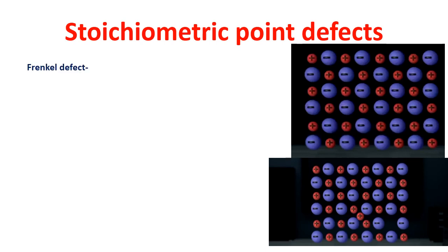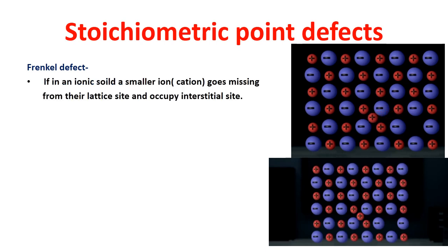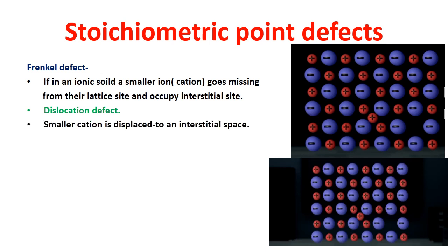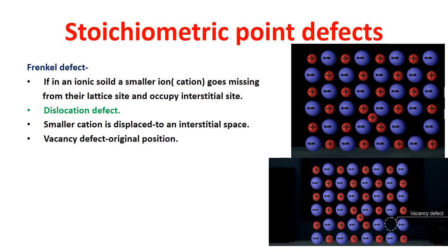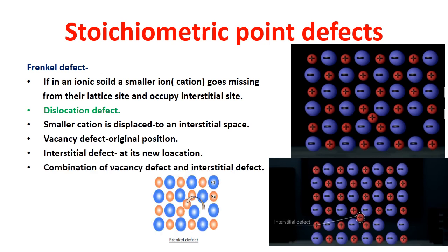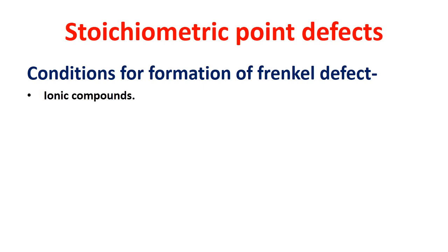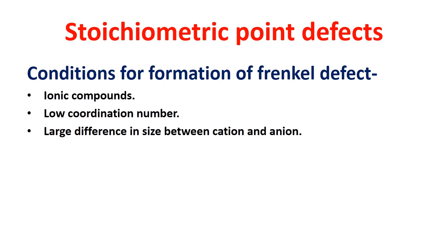The last type of stoichiometric point defect is the Frenkel defect. If in an ionic solid a smaller ion — generally a cation — goes missing from its lattice site and occupies an interstitial site, this dislocation is called a Frenkel defect, also known as a dislocation defect. The smaller cation is displaced from its normal site to an interstitial space, creating a vacancy defect at its original position and an interstitial defect at its new location. Frenkel defects are common in ionic compounds with low coordination numbers and large differences in size between cations and anions.